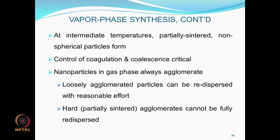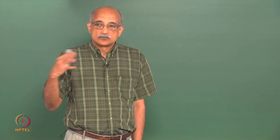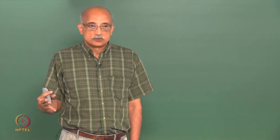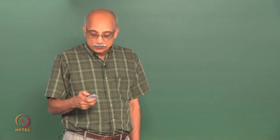Nanoparticles in the gas phase always have a tendency to agglomerate. Loosely agglomerated particles can be redispersed, but coalesced particles cannot. Hard or partially sintered agglomerates cannot be fully redispersed. Especially when running higher-temperature processes to make nanoparticles, it is extremely important to control coagulation.